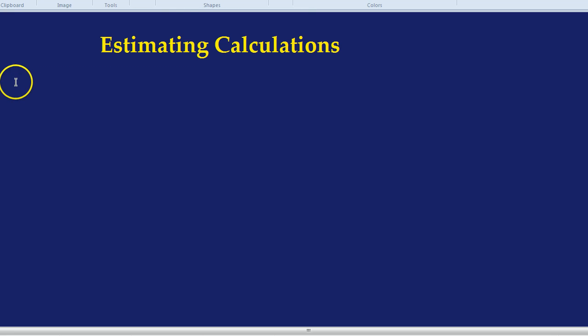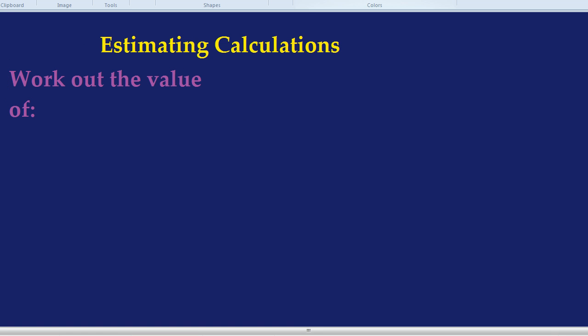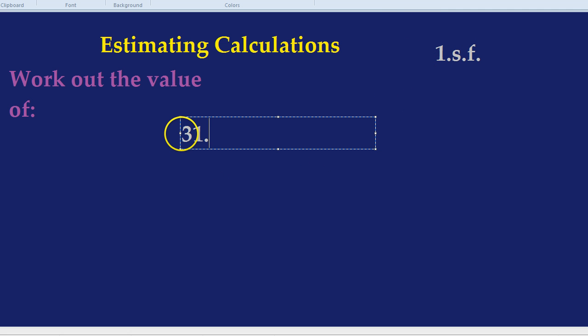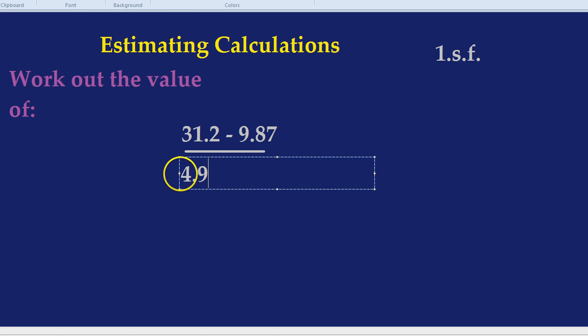If a question asks you something like work out the value of, and then it will give you a calculation and watch how we do it. We're going to get a rough answer to a calculation simply by rounding to one significant figure or 1sf for short. Here's our calculation: 31.2 take away 9.87 and then divide that by 4.96 times 2.03.